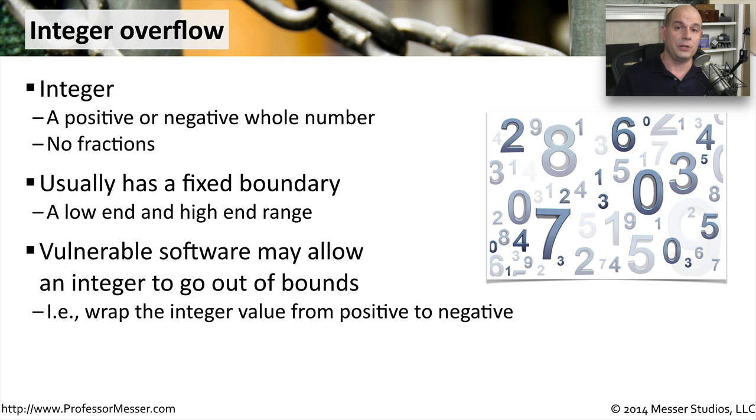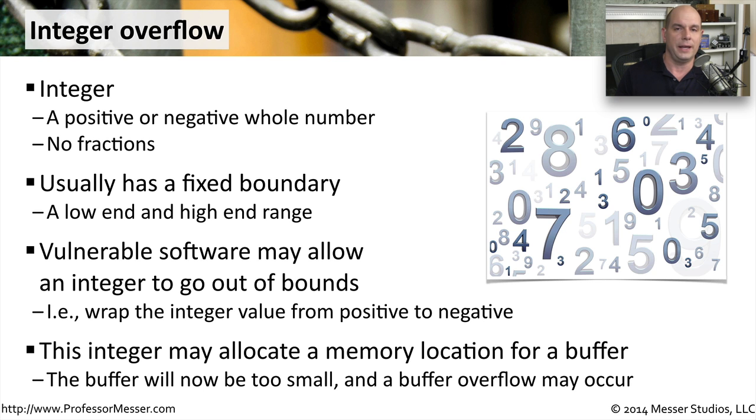This is a problem when developing software because you don't want these variables to be something unexpected. For instance, if you were allocating a space in memory, creating a buffer area to store information, and the size of that area was based on this integer. We were expecting the integer to be 32, but when we're ready to allocate the space, instead of having 32, it's now negative 32.